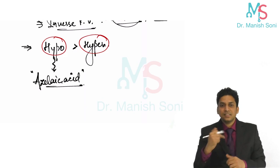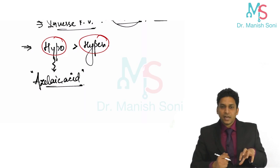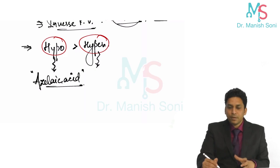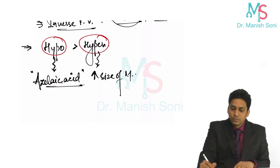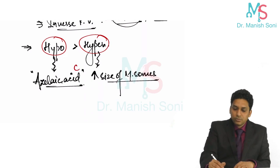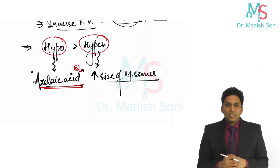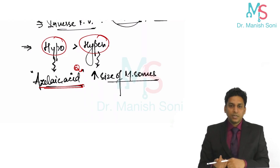This hypopigmentation is due to azelaic acid secreted by this Malassezia yeast, and sometimes the lesions are hyperpigmented, and this hyperpigmentation is due to increase in size of melanosomes. This question has already been asked: hypopigmentation is due to azelaic acid, and hyperpigmentation is due to increase in the size of melanosomes.